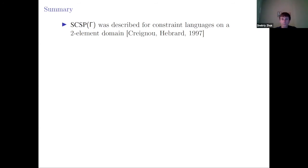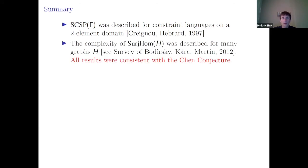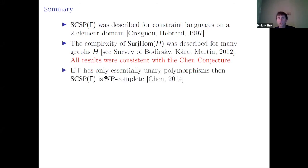Let me summarize. For the two-element domain, we know the complexity and it agrees with the Hubert Chen conjecture. For many graphs H, the complexity of surjective graph homomorphism is known — see the survey of Bodirsky, Etal, and Martin from 2012. All those results were consistent with the Chen conjecture. In 2014, Hubert Chen proved that if gamma has only essentially unary polymorphisms, then surjective CSP over gamma is NP-complete — sufficient to prove the classification for the two-element domain.